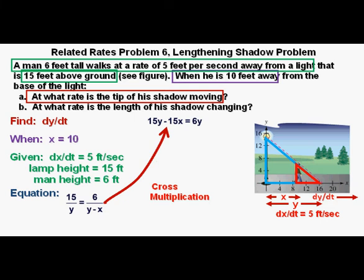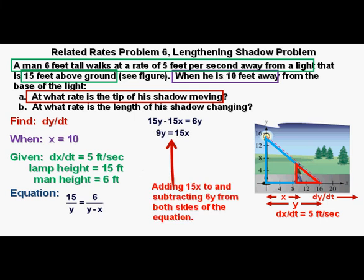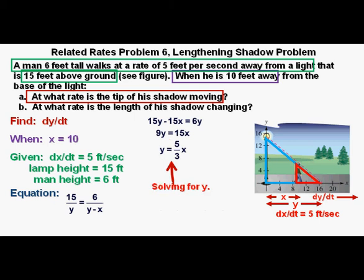And cross multiplying the equation, we get 15y minus 15x equals 6y. By adding 15x to and subtracting 6y from both sides of the equation, we get 9y equals 15x. And solving for y, we get y equals 5 thirds x.